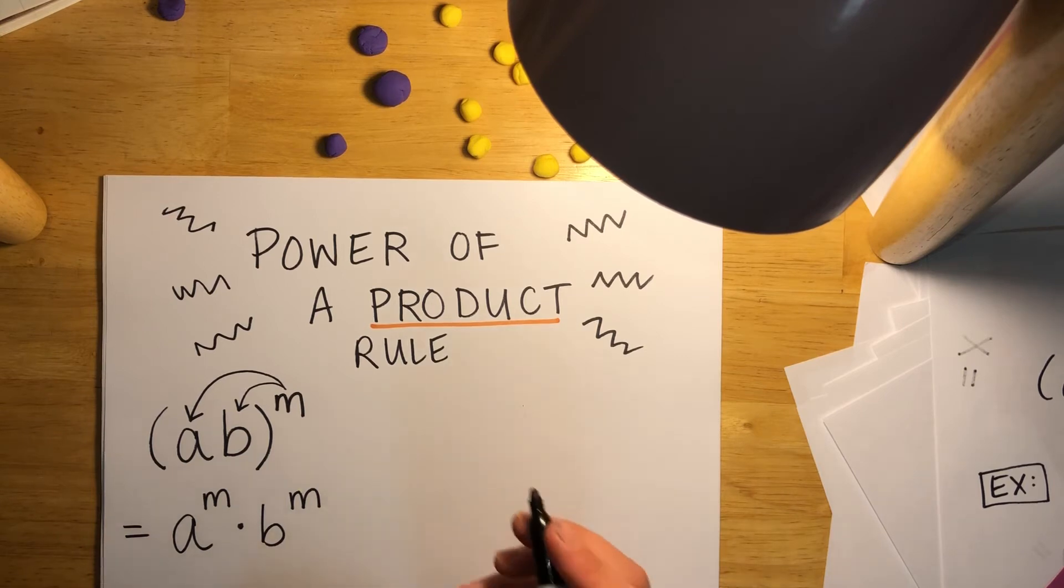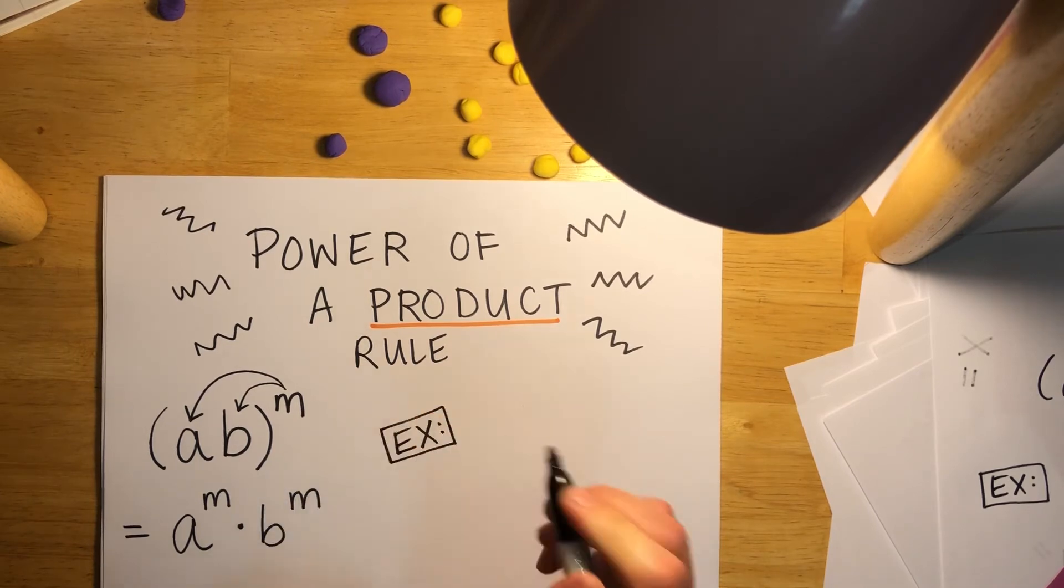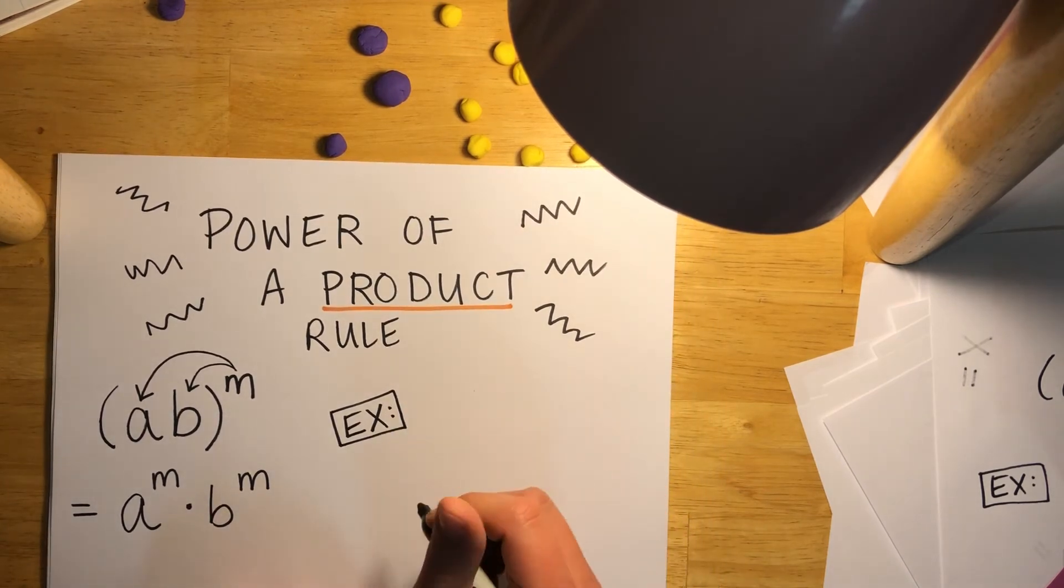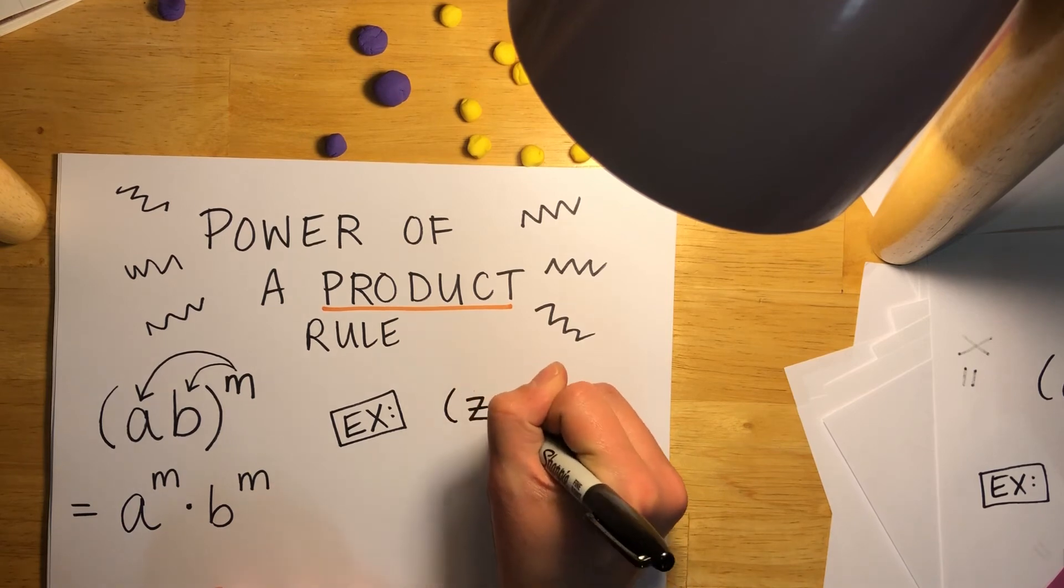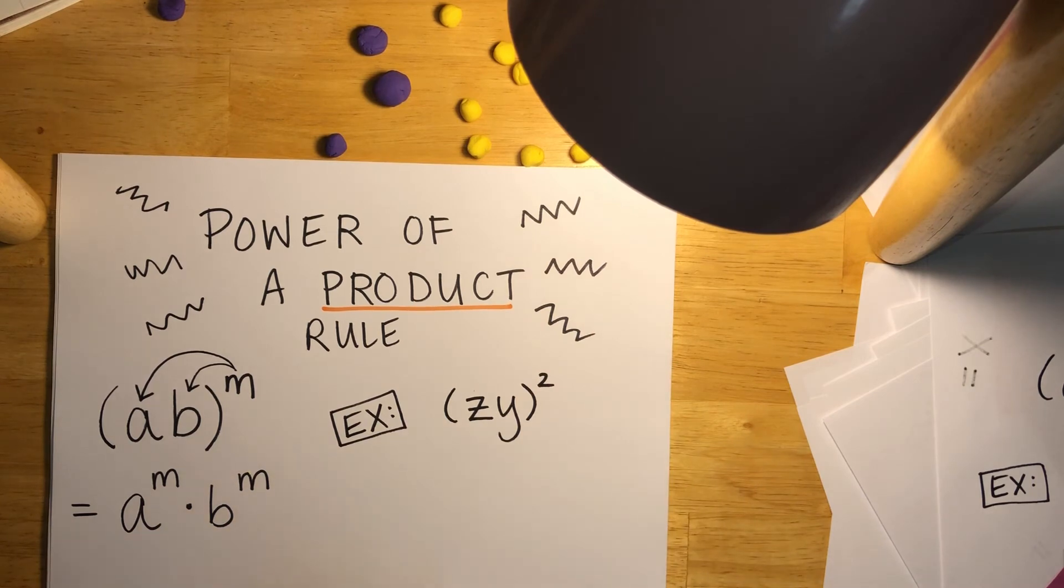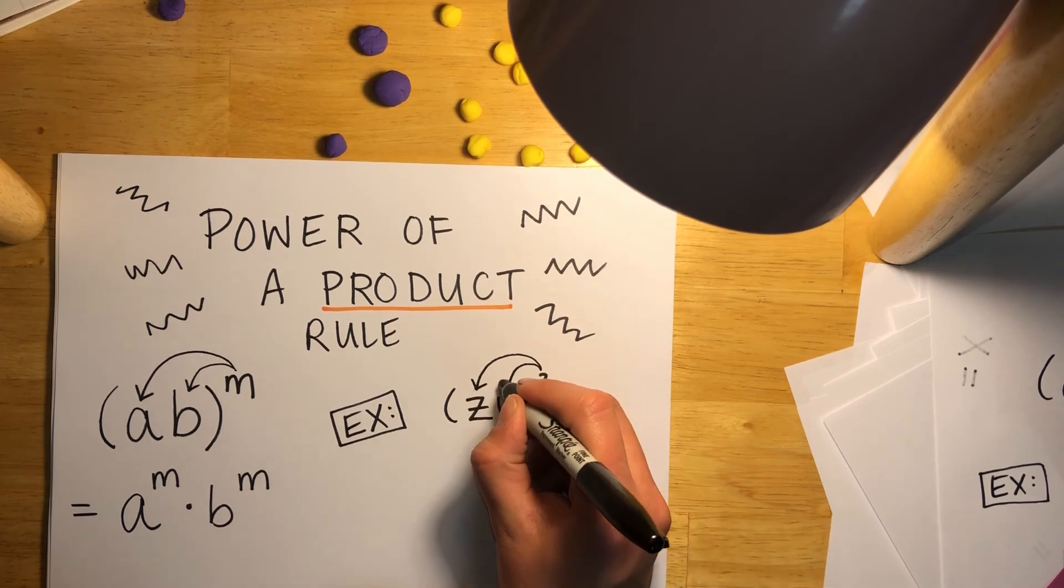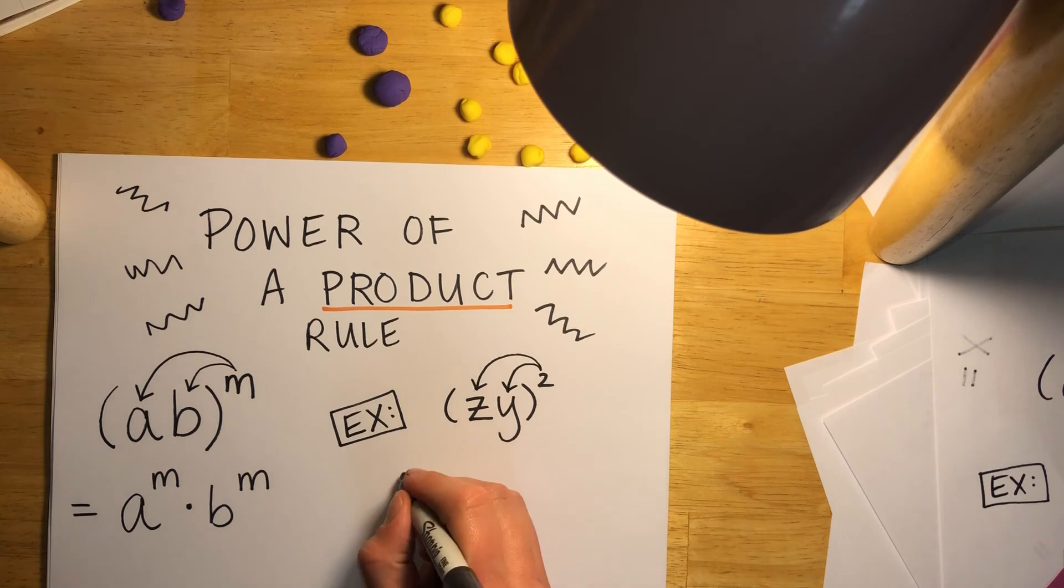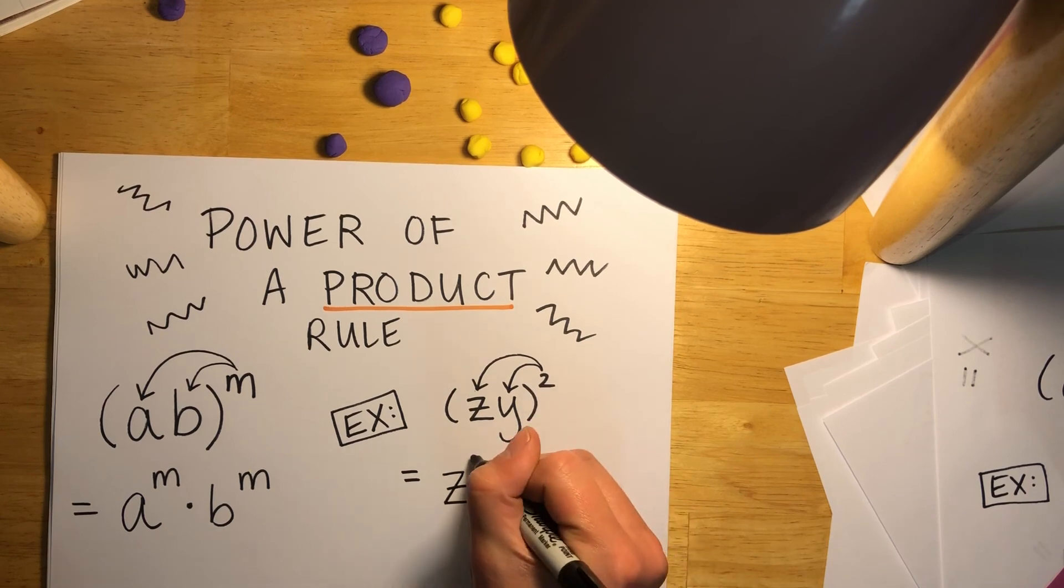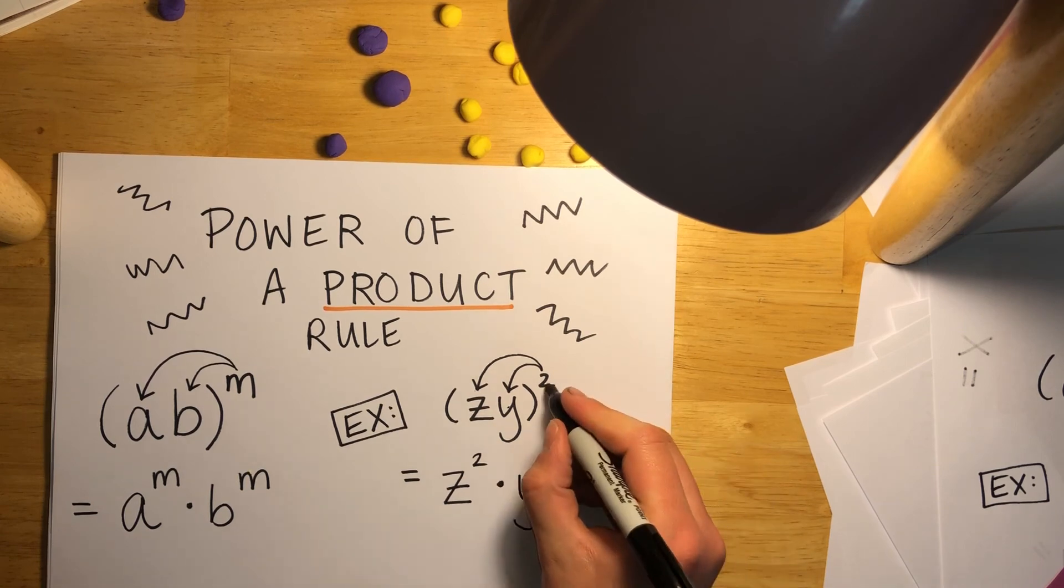Let's go ahead and take a look at an example that might help you. Let's say we have z times y squared. Alright, this 2 is going to go to z and it's going to go to y. If I rewrite this, that means that I'm going to write z to the power of 2 times y to the power of 2.